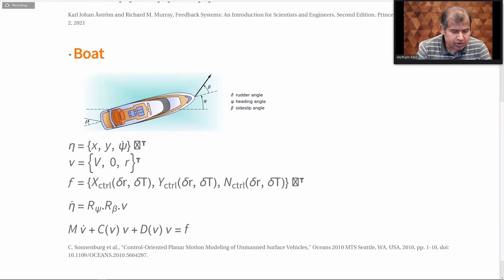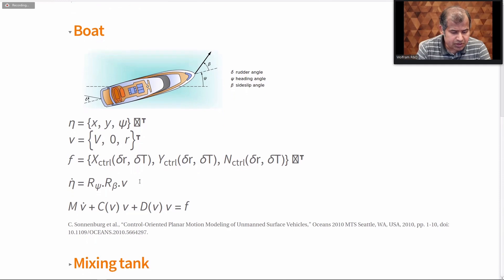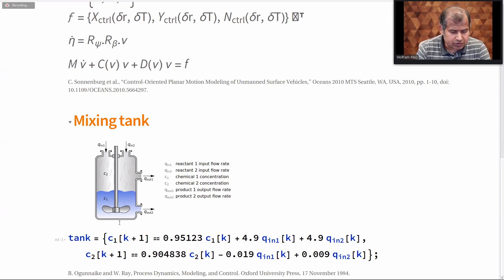Here is the model for a boat, also based on Newton's laws. You can see it can get complicated really fast, where the input forces become nonlinear functions of the inputs to the boat. I also have a third example — the model for a mixing tank — describing how the concentrations of two chemicals change in response to the flow rates of two input reactants. This is a difference equation. When we have models like this, we can put them into a canonical form.